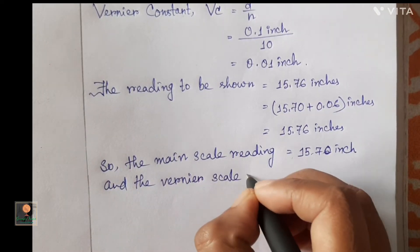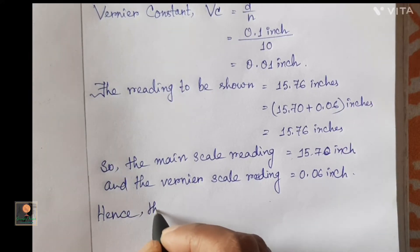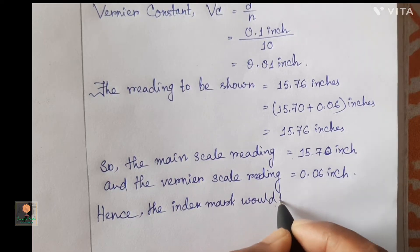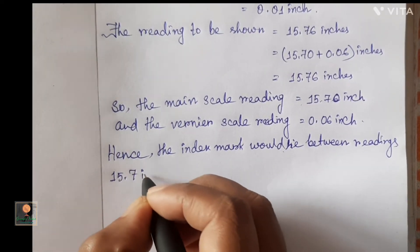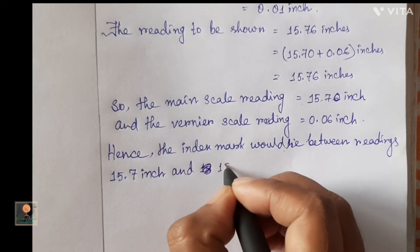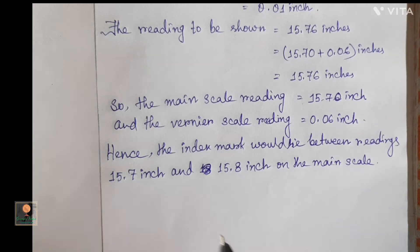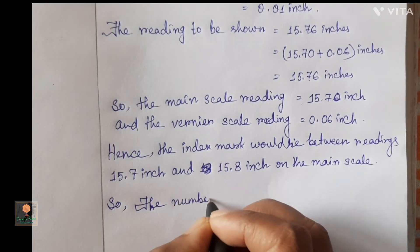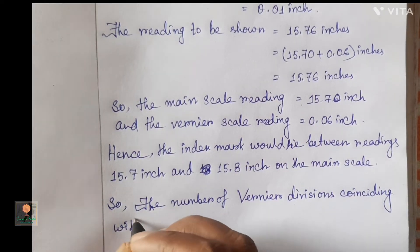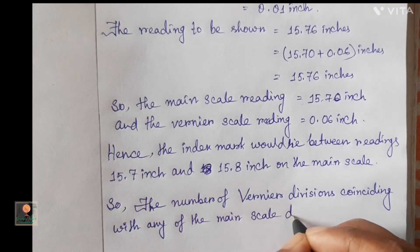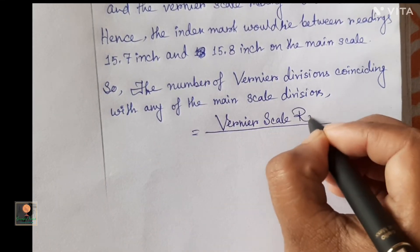The main scale reading equals 15.70 inch, and the Vernier scale reading equals 0.06 inch. Now we calculate the coinciding division number: the index mark lies between 15.7 inch and 15.8 inch on the main scale. The number of Vernier divisions coinciding with a main scale division equals Vernier scale reading divided by Vernier constant — that is 0.06 divided by 0.01 — which equals 6.